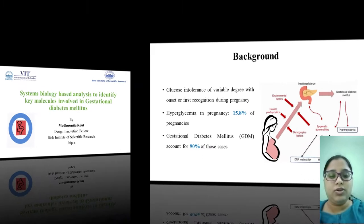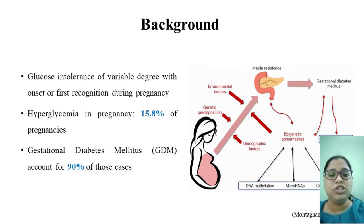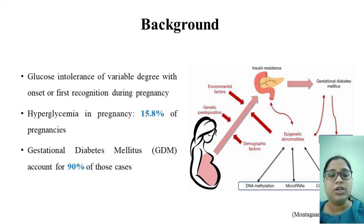At the outset, GDM is characterized due to glucose intolerance caused by insulin resistance during pregnancy, mostly in the third trimester. Around 15.8% of the population are affected by hyperglycemia in pregnancy, out of which 90% of the cases are gestational diabetes mellitus.